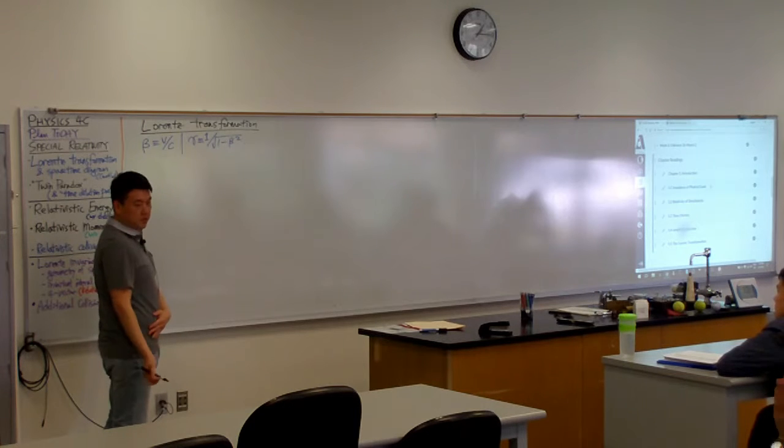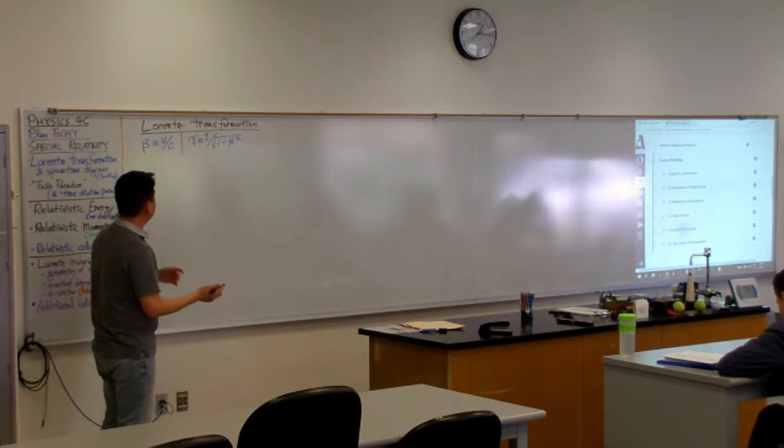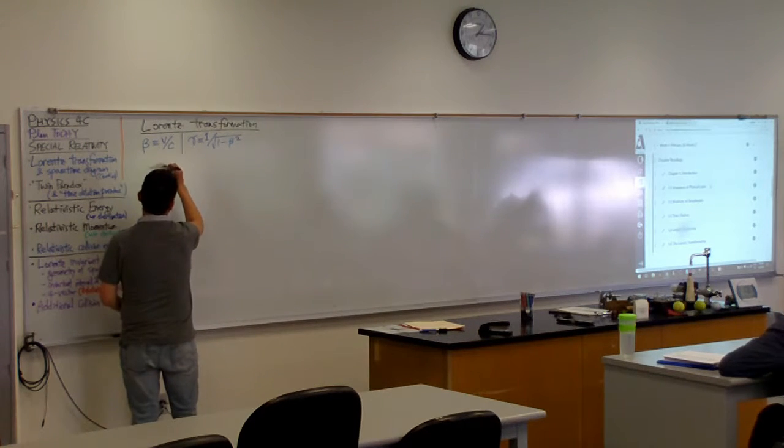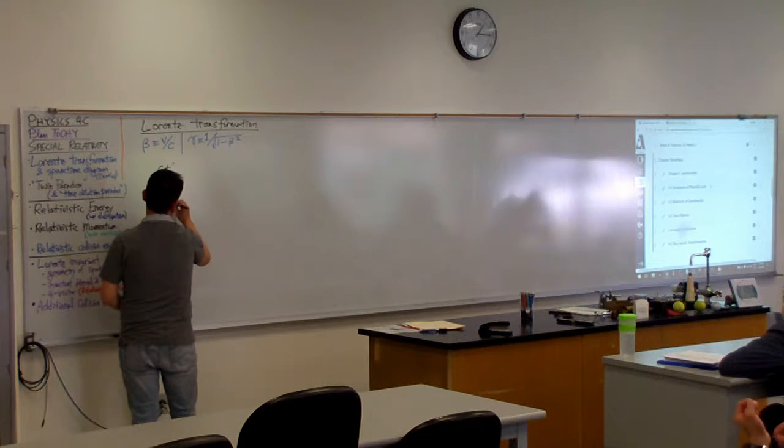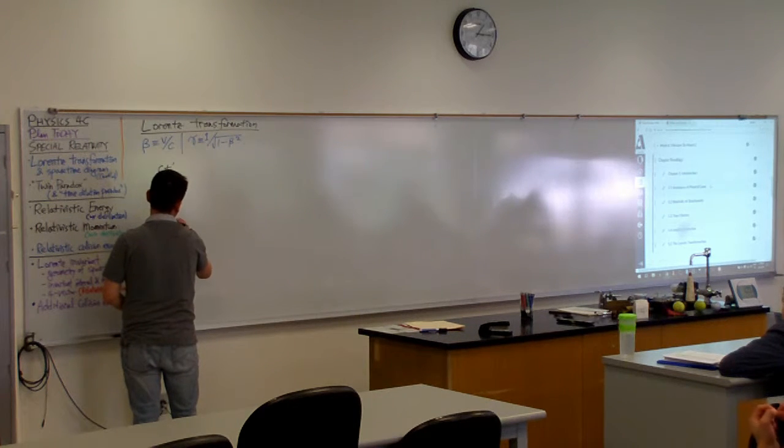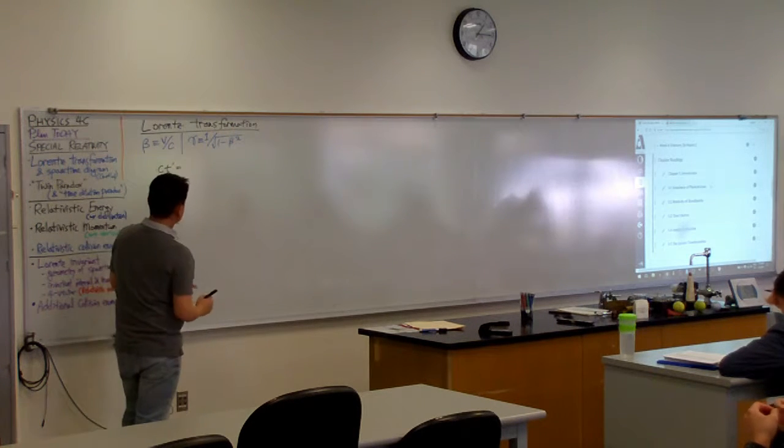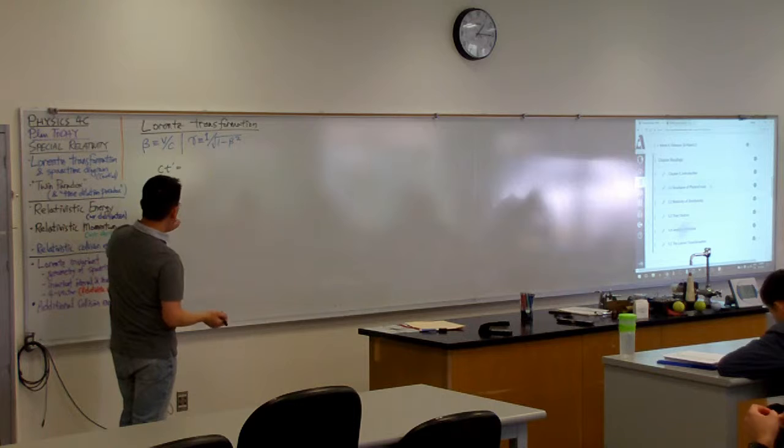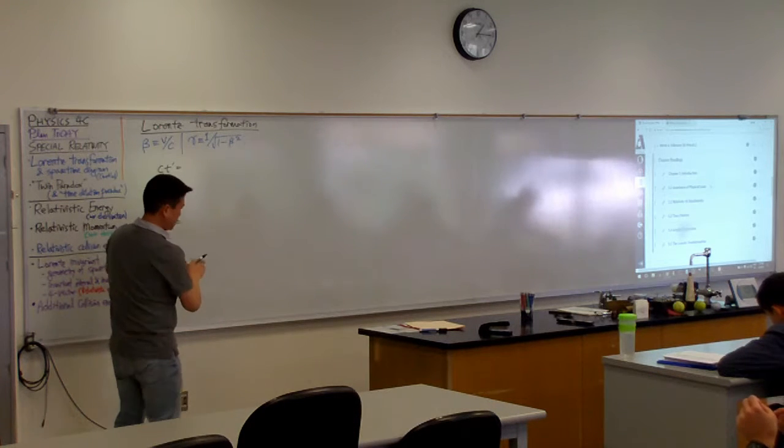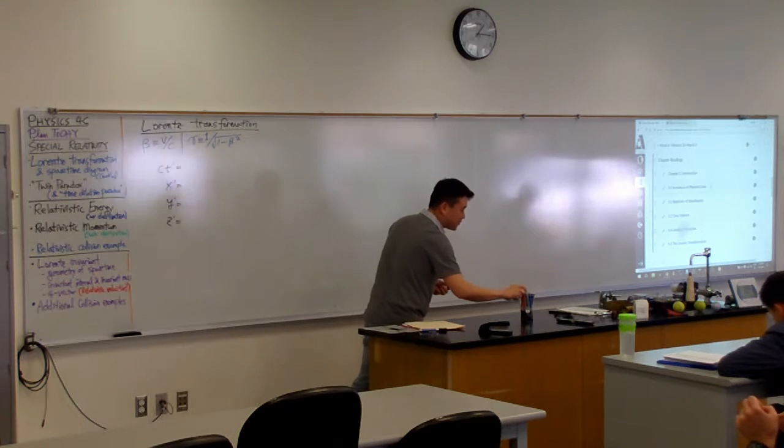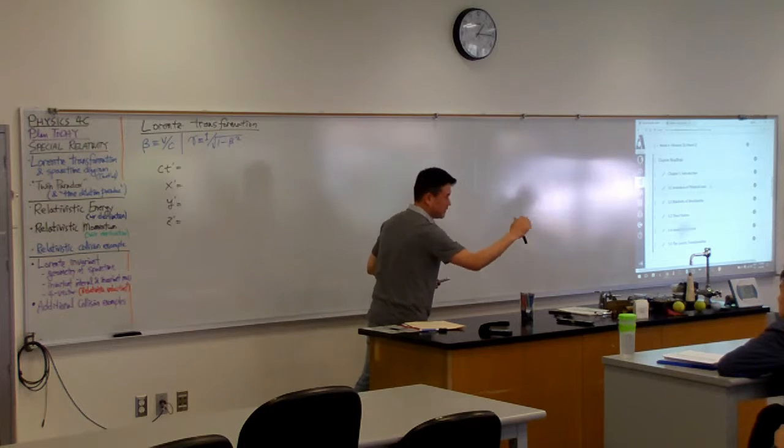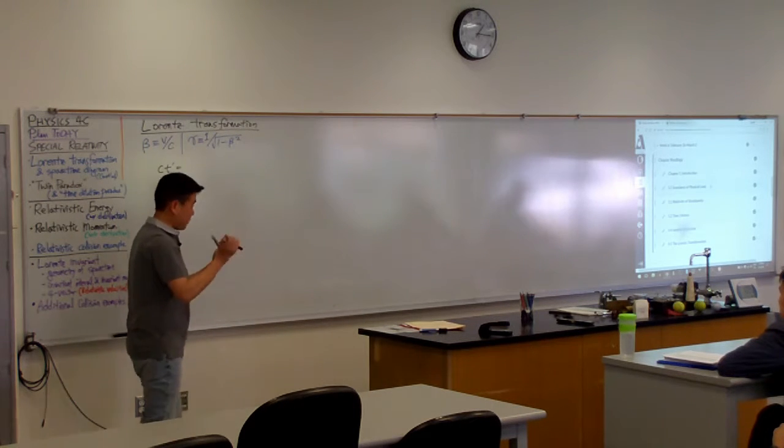Lorentz transformation can be written in this way that I remember best. CT prime, X prime, Y prime, Z prime. These can be written. So we are assuming, so this is a standard assumption so I feel silly spelling it out every single time but I should be clear.